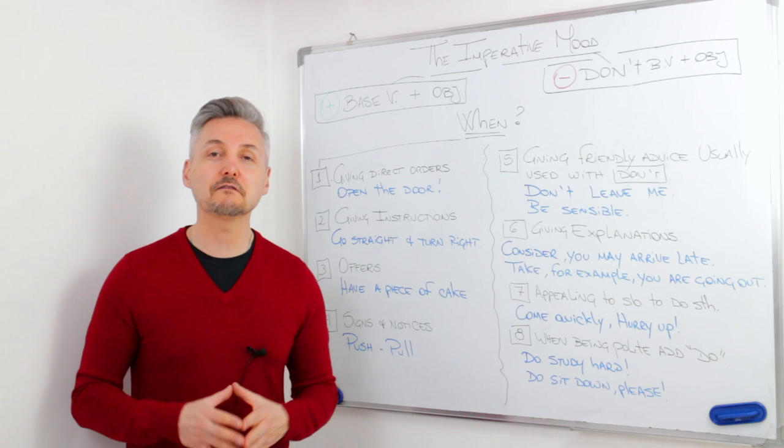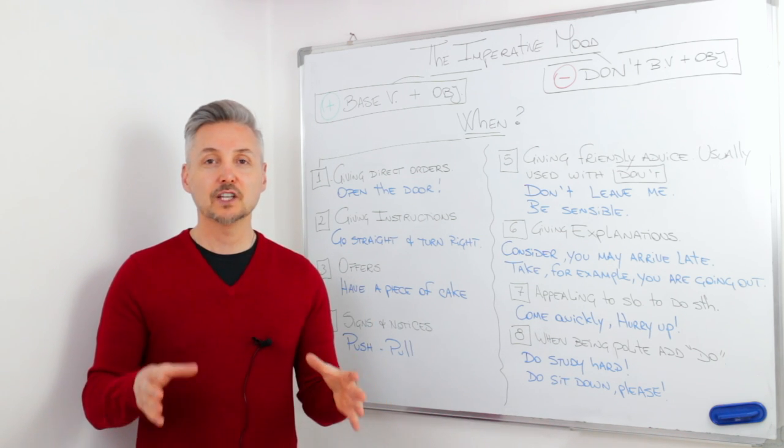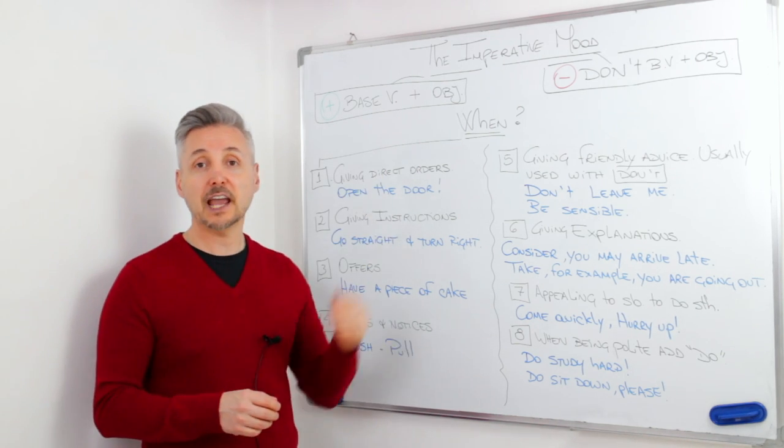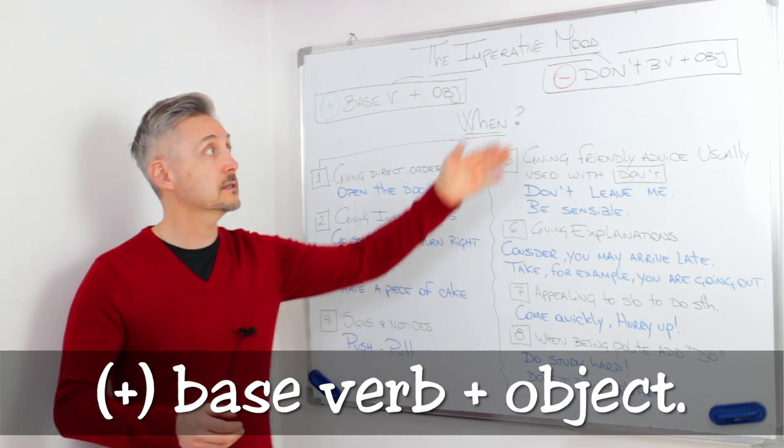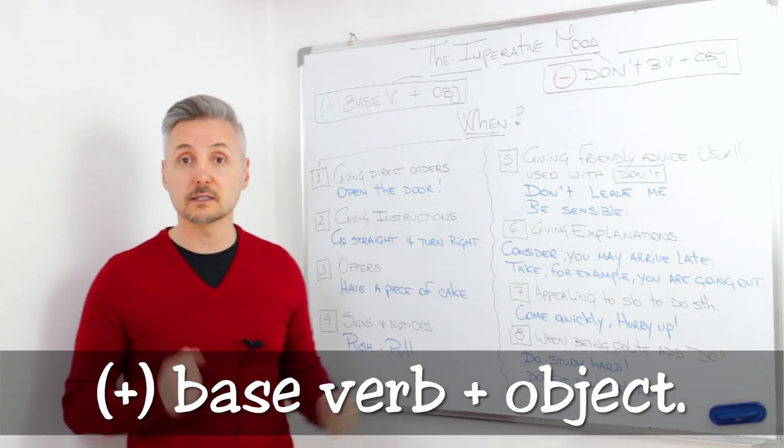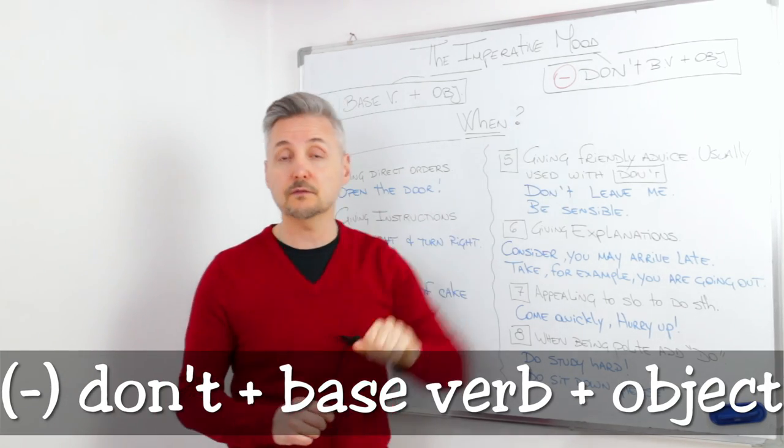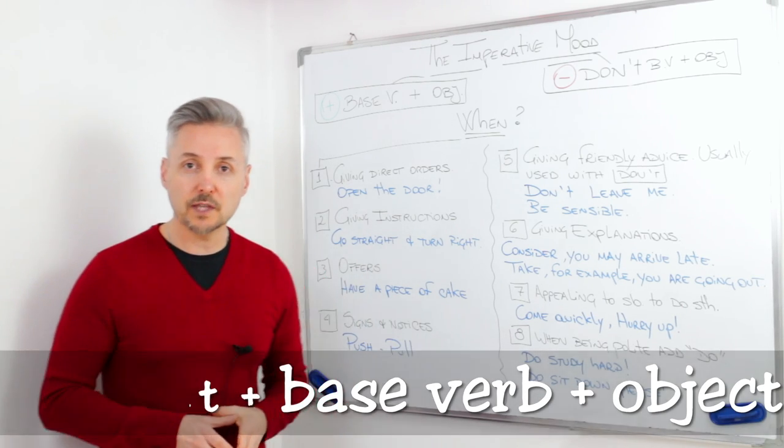The imperative mood. It's a mood. It's not a tense. So we use it in two ways. In positive sentences, we need the base of the verb plus the object, and in negative sentences, we need do not, don't, plus the base of the verb and the object.